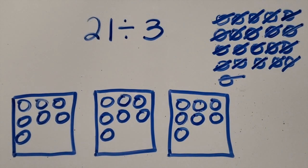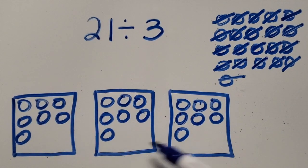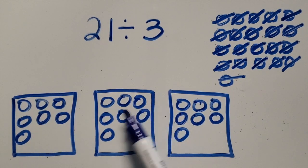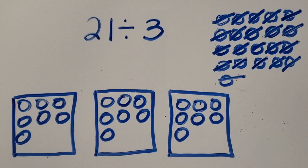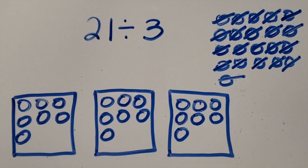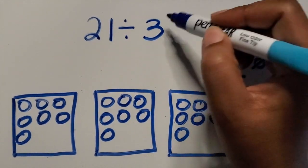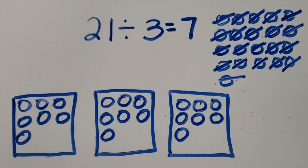So as you can see, all of my circles ended up in a group and there's an equal amount in each group. Let's count: 1, 2, 3, 4, 5, 6, 7 in each group. You want to emphasize that the groups are equal — they should all have the same amount — so that we know in each group there are seven circles, which tells us that 21 divided by 3 equals 7.